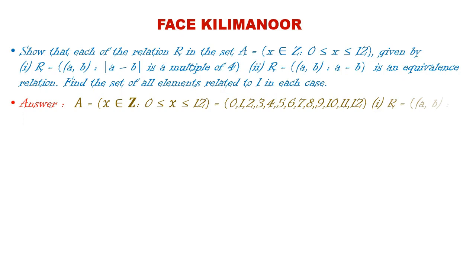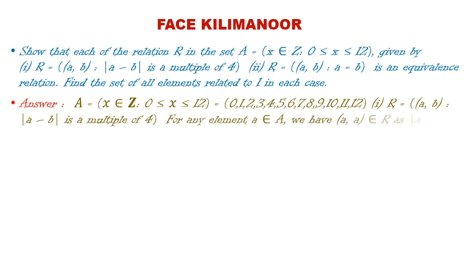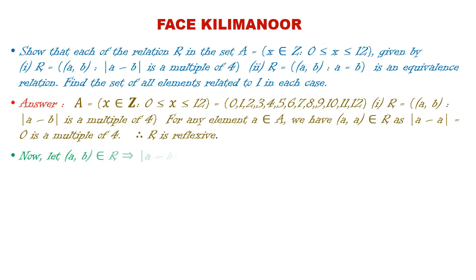The set A = {x ∈ Z : 0 ≤ x ≤ 12}, that means A = {0,1,2,3,...,12}. For relation (i), R = {(a,b) : |a−b| is a multiple of 4}. For reflexivity: |a−a| = 0, and 0 is a multiple of 4. Therefore R is reflexive.